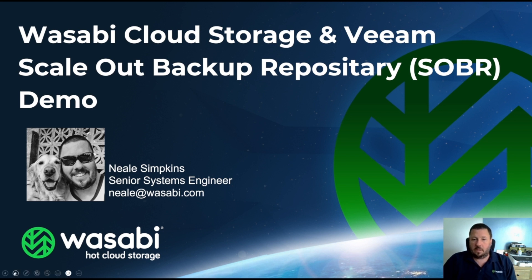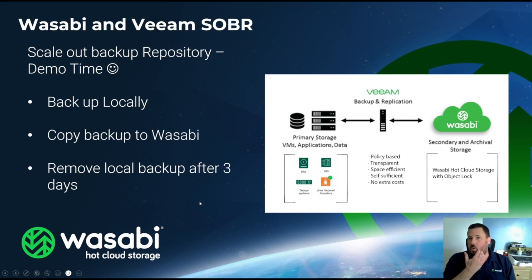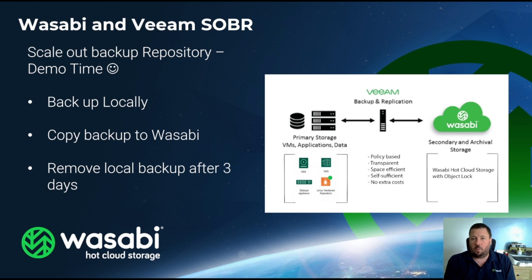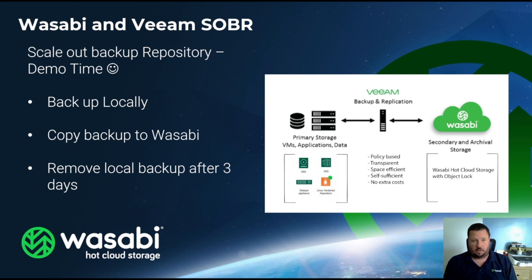For this demo, I've already got a bucket created that we'll go through quickly. I'll show you my local repository that I've already pre-created, then we're going to add a Wasabi repository, link the local and cloud repositories together using a Scale-Out Backup Repository, and then create a backup job to show you how to select the scale-out repository for use.